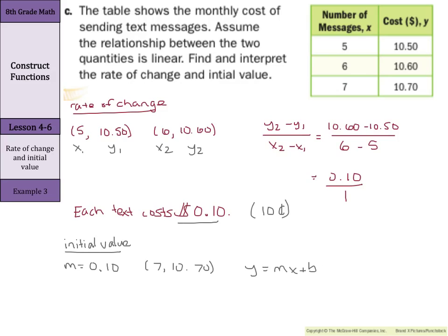Our y is 10 dollars and 70 cents. Our m is 10 cents. Our x is 7 plus b. This works out kind of nice. We have 10 dollars and 70 cents equals, now 10 cents times 7, that's 70 cents plus b.